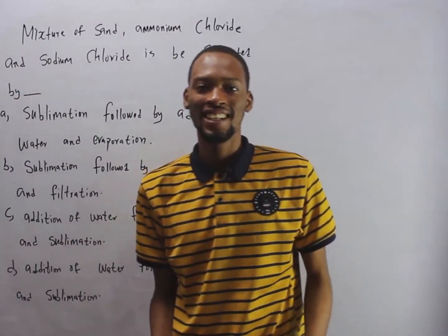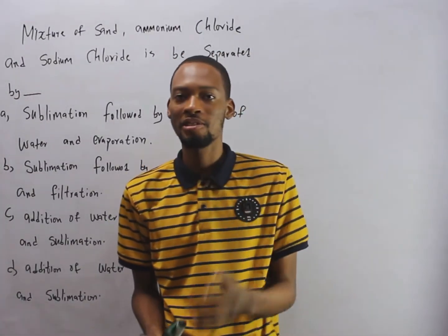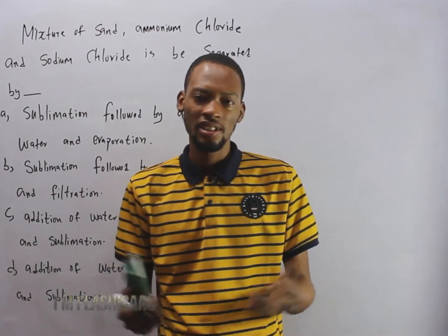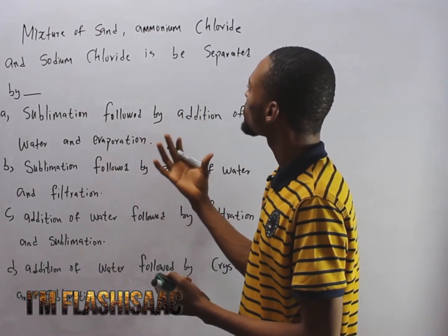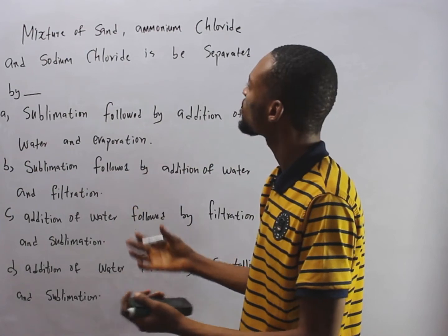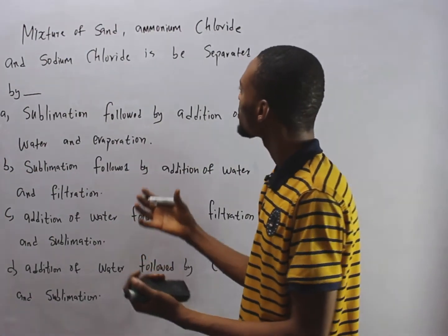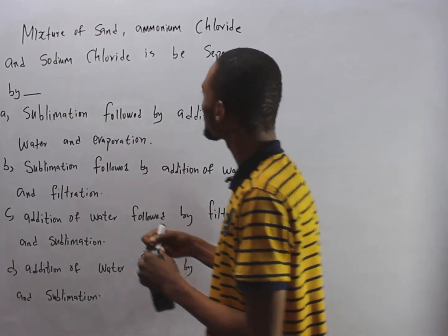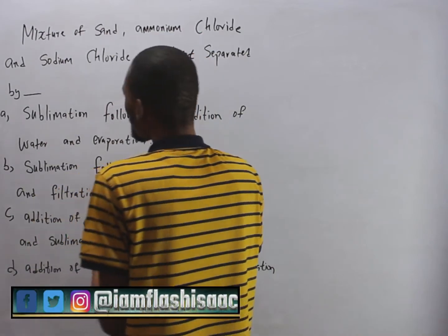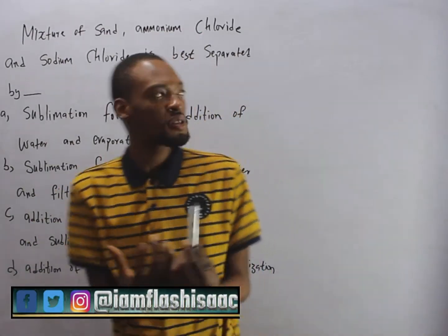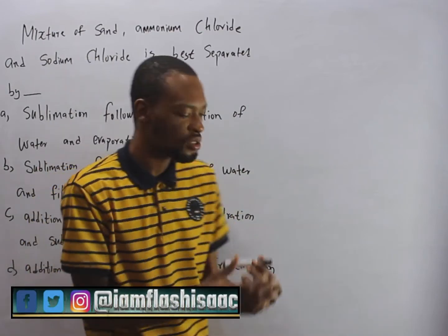Hello guys, I am Flash Isaac. Let us take a look at this question. It says mixture of sand, ammonium chloride and sodium chloride is best separated by. So how do we best separate the mixture of sand, ammonium chloride and sodium chloride?